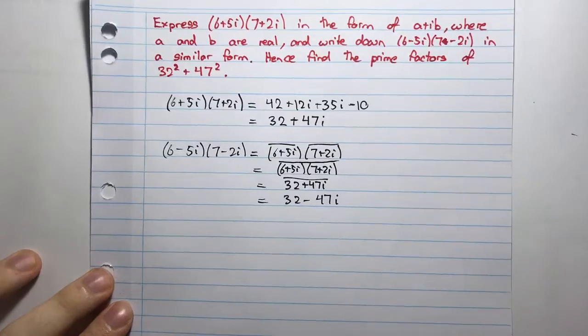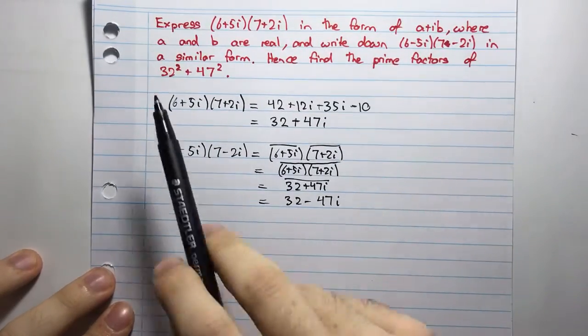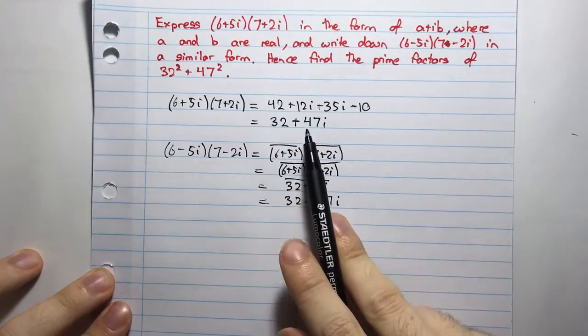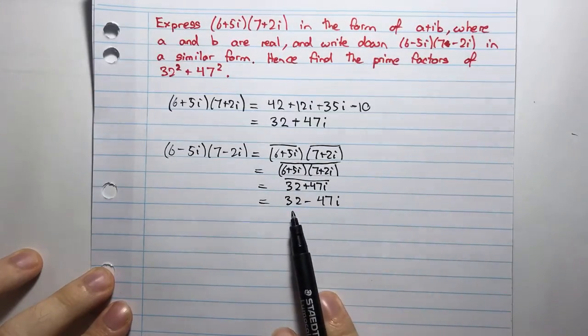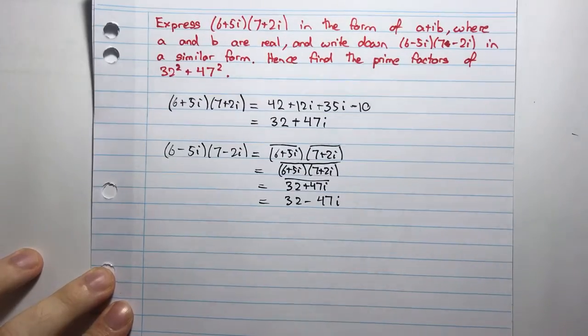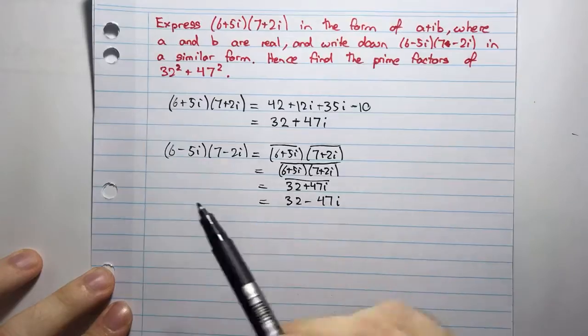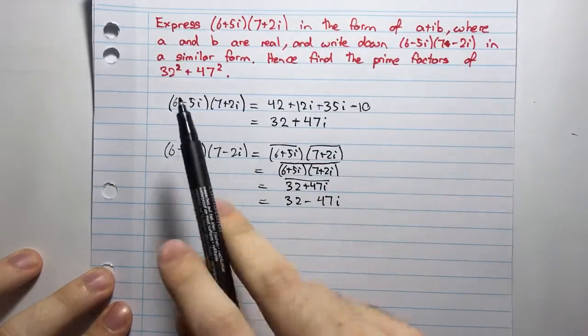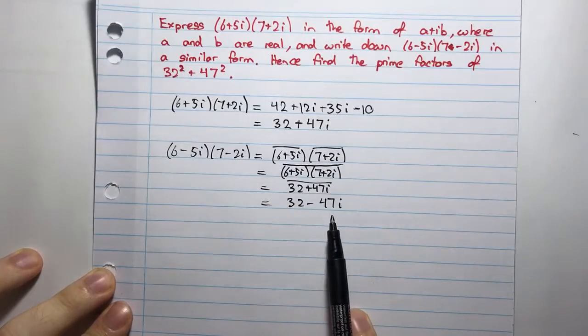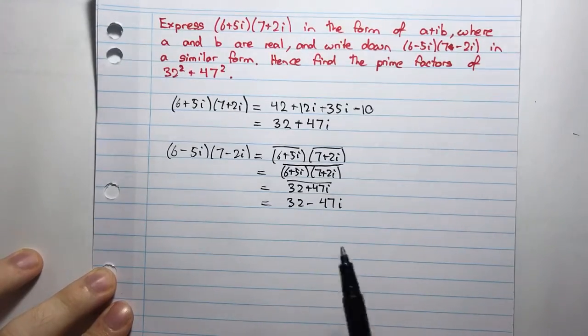And then it tells me to hence find the prime factors of 32² + 47². Okay, so for this question, I say that I have 32² and 47². Here I have a 32 and a 47. Here I have a 32 and a 47, but the only difference is now I have a negative.